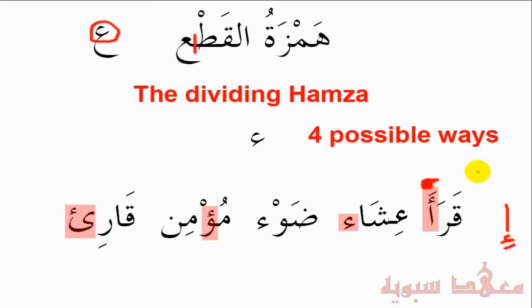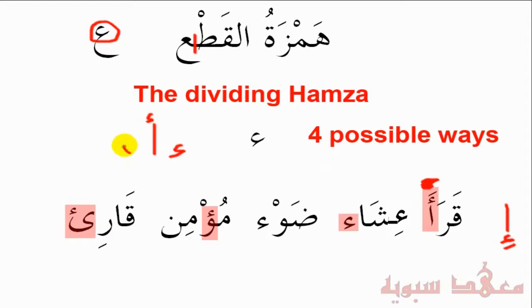So we can see the four possible ways: being alone, with an Alif, with a Wao, and with a Ya'. Let's say we have the Hamza alone, the Hamza with an Alif, the Hamza with a Wao, and the Hamza with a Ya' — and let's give all these the same Harakah, let's say the Dhammah.